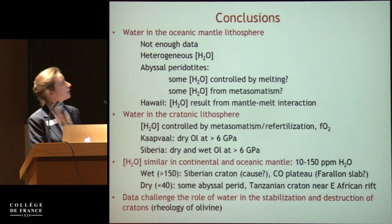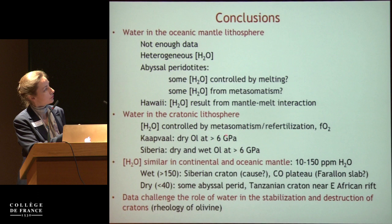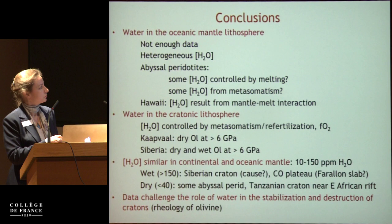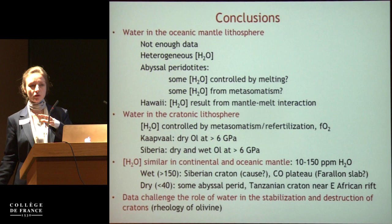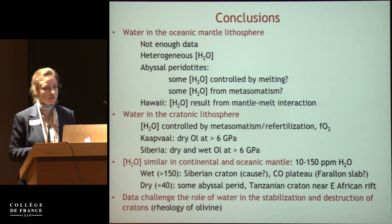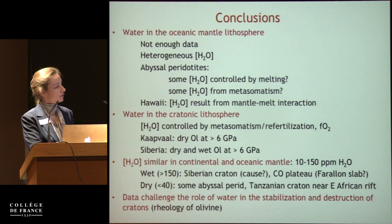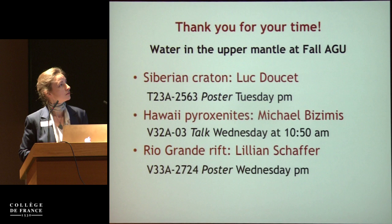In conclusion: we don't have enough data for the oceanic lithosphere. In cratonic lithosphere, water is controlled by metasomatism and oxygen fugacity. Water content is broadly similar in continental and oceanic lithosphere with a few extremes. And the lack of a clear correlation between deep dry cratonic roots and stable cratons versus wet thinning cratonic roots challenges the assumption that water plays an important role in the stabilization and destruction of cratons. Thank you — you can learn more at AGU.